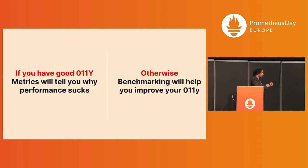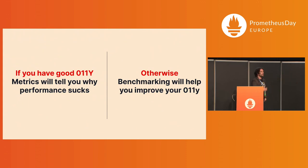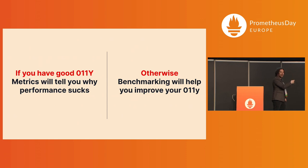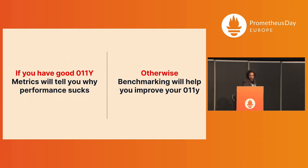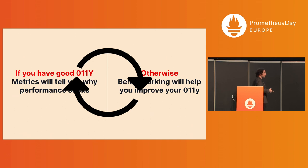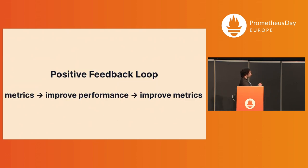And so you get into this kind of dichotomy. If you have good observability signals already, then those signals will give you a lot of insights about what's going on in the benchmarking run. However, if you don't have that, this method will force you via benchmarking to add additional observability instrumentation into your application because you need to figure out what's going on. This creates a nice cycle where improving your performance also improves your observability — a positive feedback loop where metrics improve performance and improved metrics.